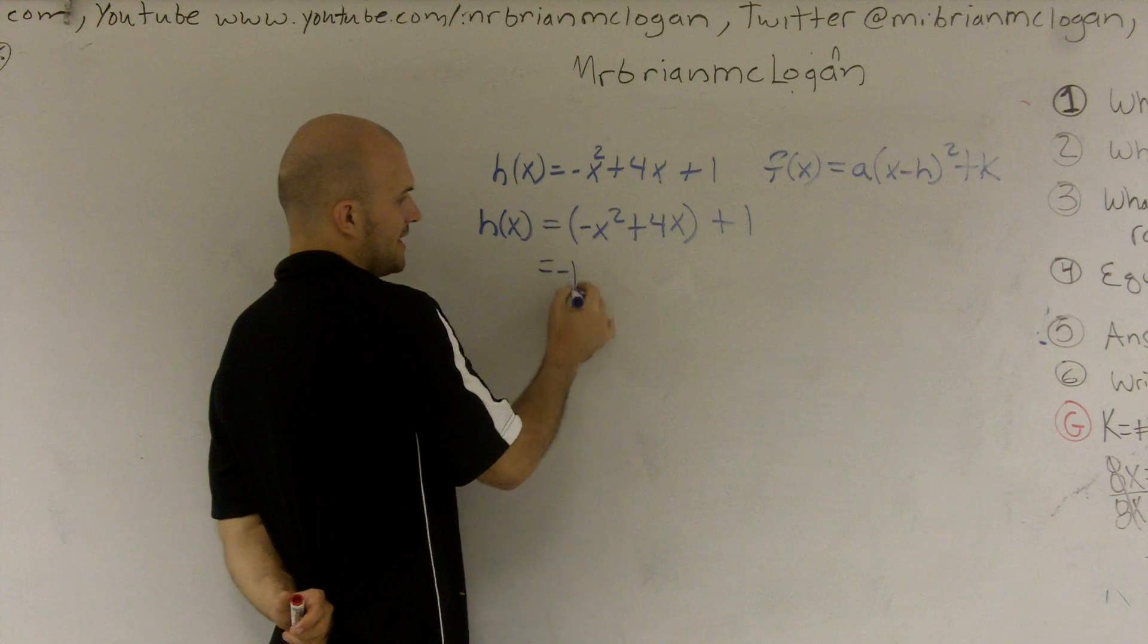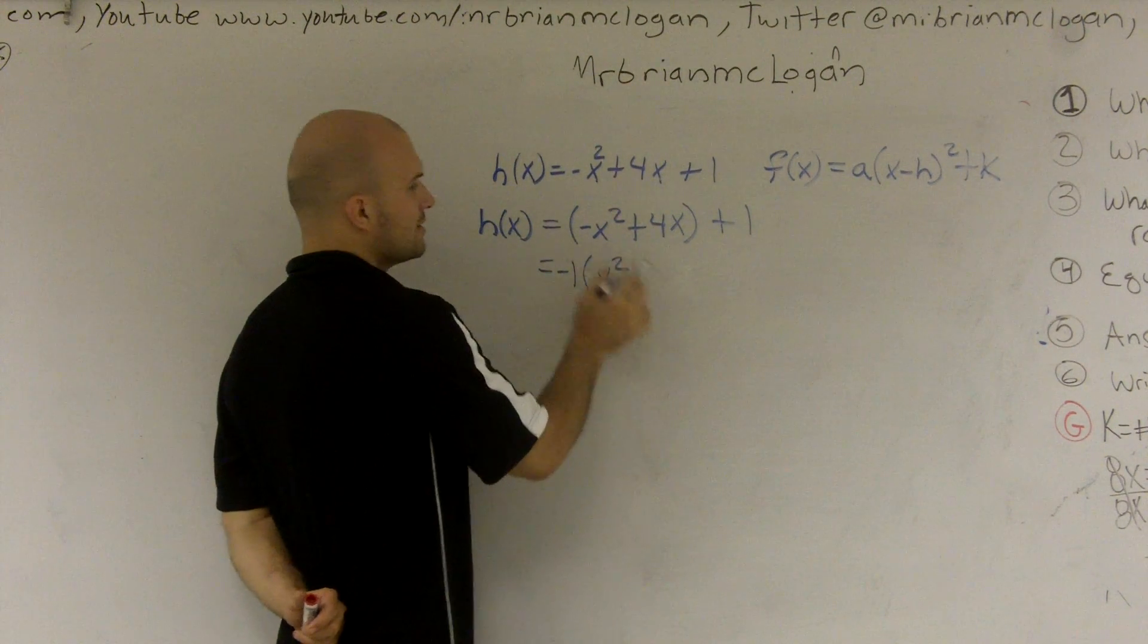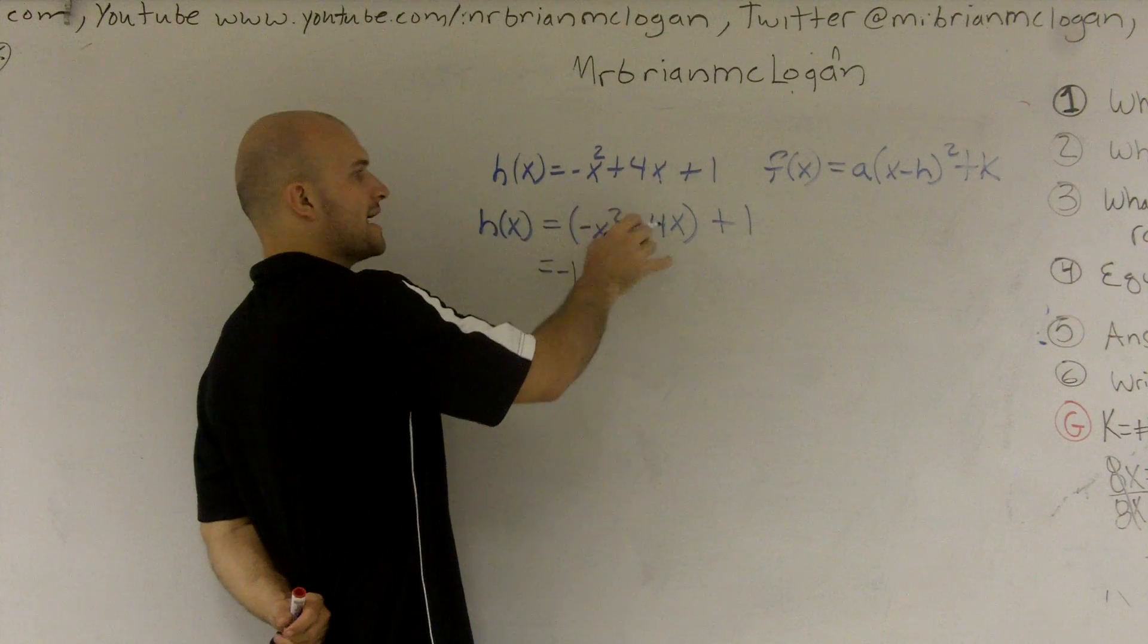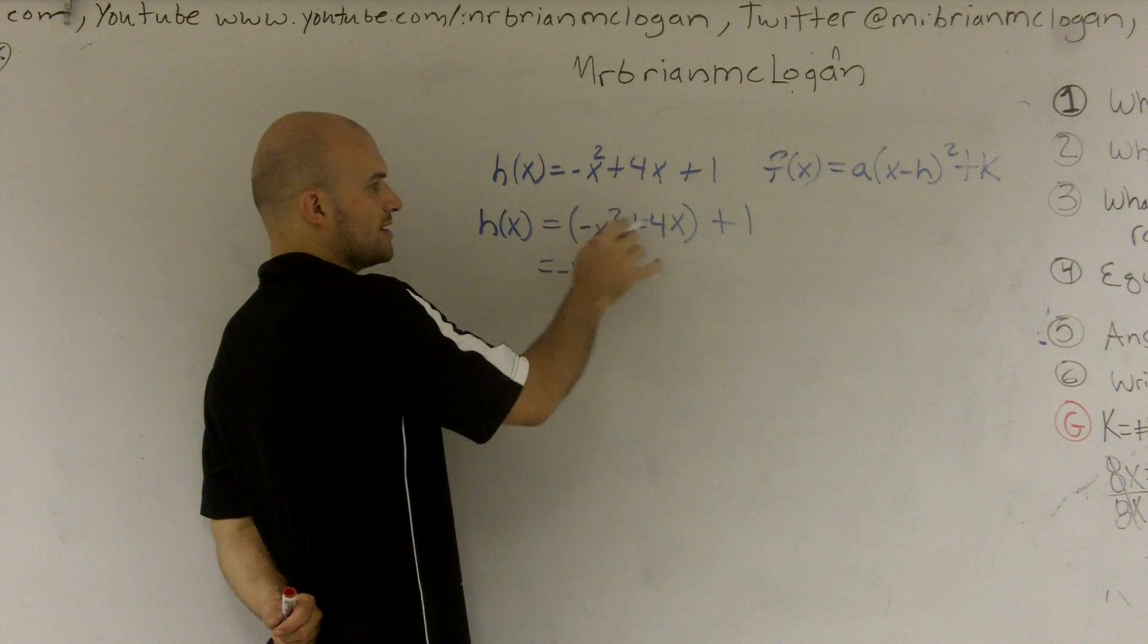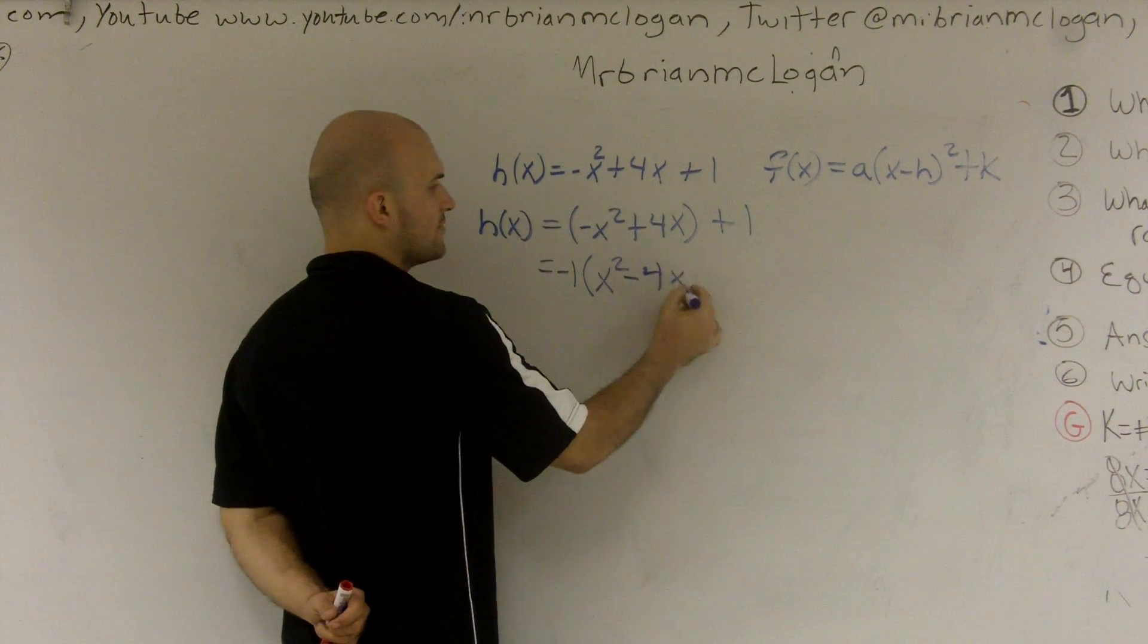So when I do that, I get a negative 1. I'm left with x squared. Well, remember, you've got to factor that out of both terms. So that's going to become an x squared. This will become a negative 4x.